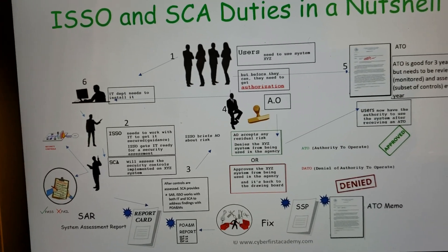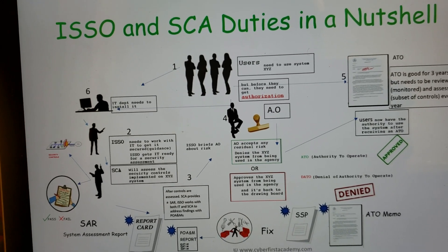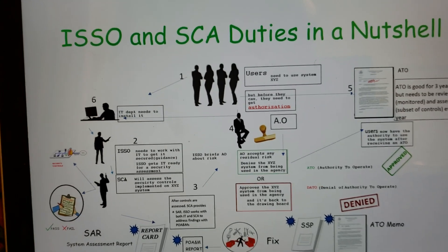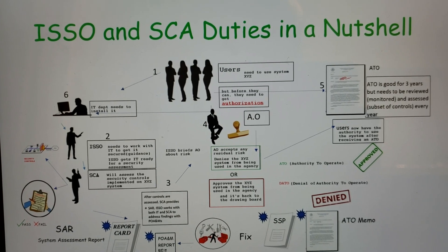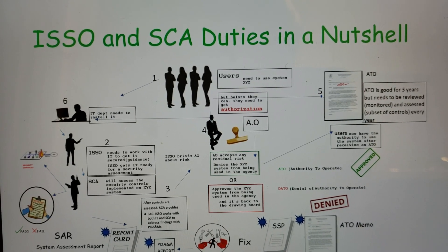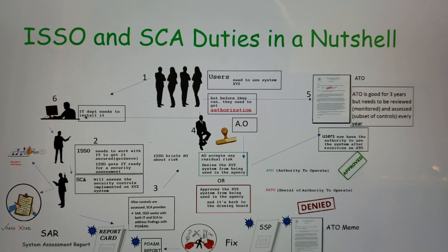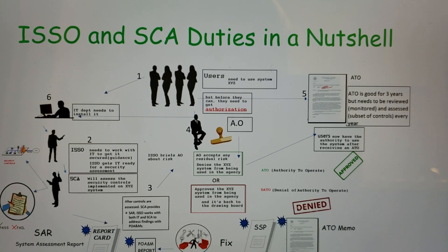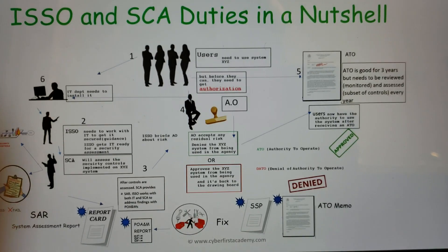So, ISO and Security Control Assessor duties in a nutshell. ISO stands for Information System Security Officer; SCA stands for Security Control Assessor. In the RMF, the whole goal is to get a system authorized — to get a system the green light to install on the production network.